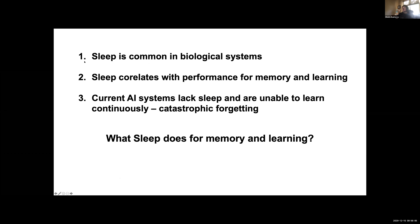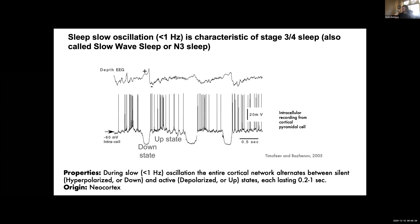I'm going to talk about a particular rhythm called slow oscillations, which happen during deep sleep. These are recordings from a cortical cell going between up states and down states, recorded in a cat. This is a depth EEG. Essentially, this is a state of the brain when it goes semi-rhythmically between active states lasting maybe one second and down states lasting maybe half a second.